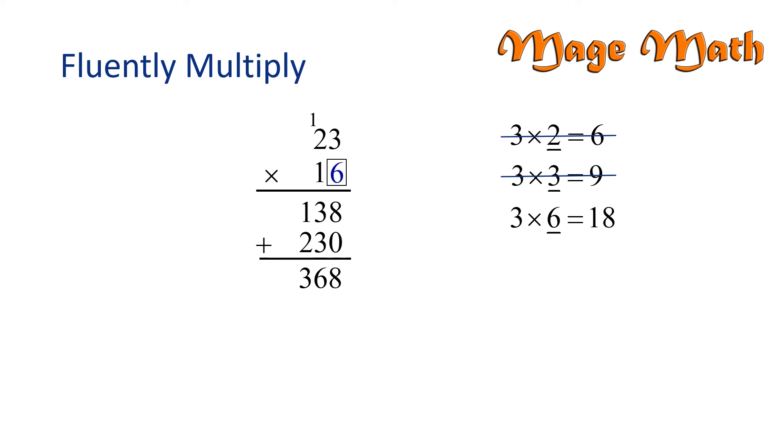So far, six checks as the correct digit to go in the box. Twenty-three times sixteen equals three hundred sixty-eight. Great job!